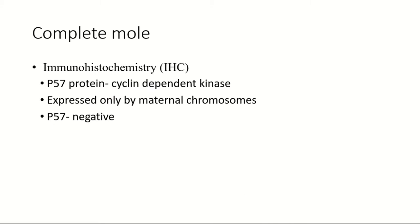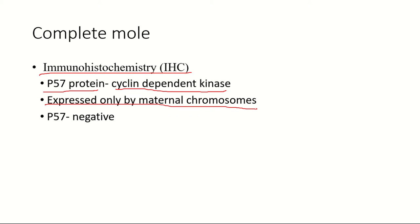Another method to identify complete mole is immunohistochemistry. There is a protein called p57, a cyclin-dependent kinase inhibitor, which is expressed only by maternal chromosomes. In complete mole, the egg is empty, meaning there are no maternal chromosomes; hence p57 protein is not expressed, and the test comes back negative.